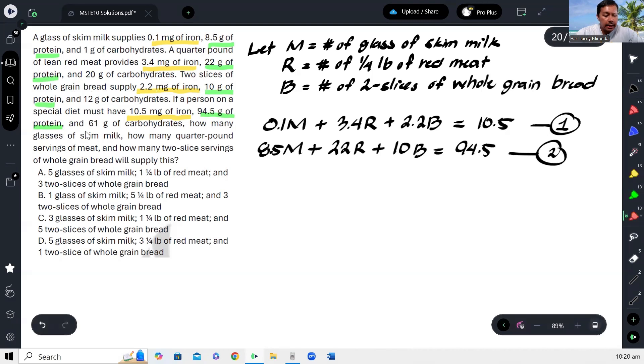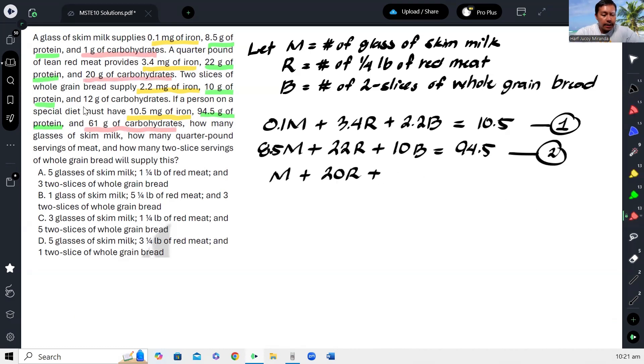And then our third equation will come from the amount of carbohydrates. So yung carbohydrates dito sa milk ay 1 gram. Plus, sa quarter pound naman, 20 grams na red meat. And then lastly, 12 grams para sa bread. And lahat ng yun dapat equal sa 61 grams. And as you can see, we only have here three equations with three unknowns. So we should be able to solve this easily using our calculator.